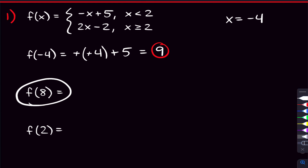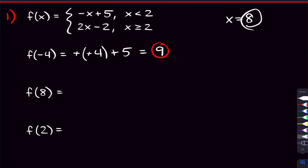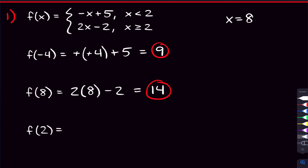Now what about f of eight? Here, x is now equal to eight. Looking at the second condition — x greater than or equal to two — we know that eight is greater than or equal to two, so that works. We're gonna use our second function, two x minus two. Plugging in eight for x gives us two times eight minus two. Two times eight is 16, minus two is 14. So f of eight equals 14.